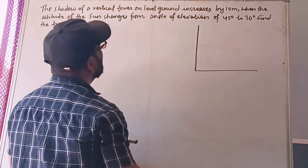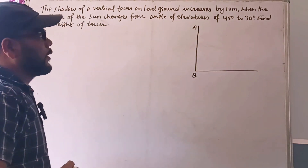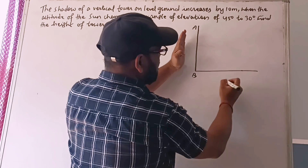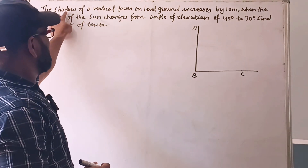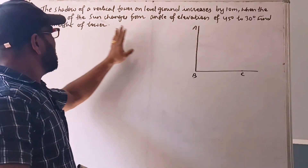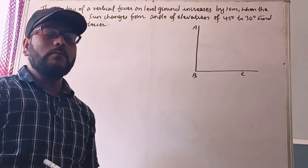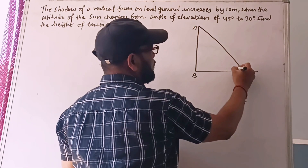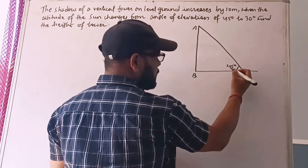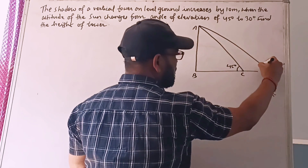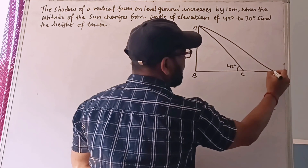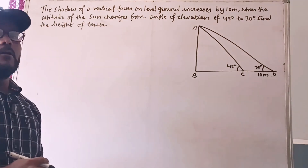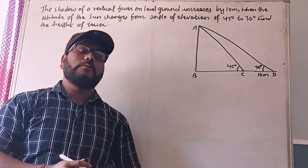Suppose AB is the height of the vertical post and the shadow of this post will be here. Suppose this is the point C. The shadow of the vertical tower on level ground increases by 10 meters when the altitude of the sun changes from 45 degrees to 30 degrees. The angle of elevation of the tower at point C is 45 degrees, and the length of the shadow changes by 10 meters when the angle of elevation becomes 30 degrees.